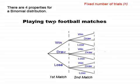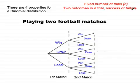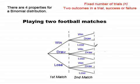The second property of a binomial distribution is that we should have two outcomes in a trial — success or failure. In this particular tree diagram, I haven't got two outcomes; the outcomes are winning, drawing, or losing — three outcomes. So this type of tree diagram is not suitable for a binomial distribution.